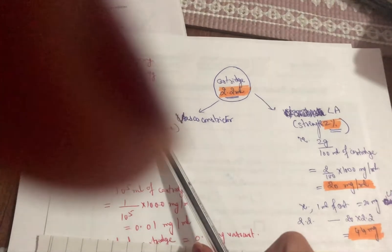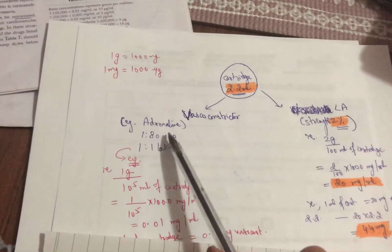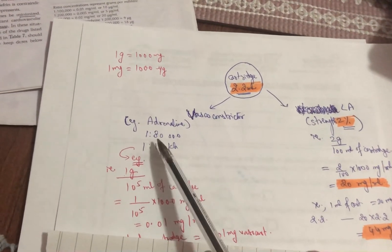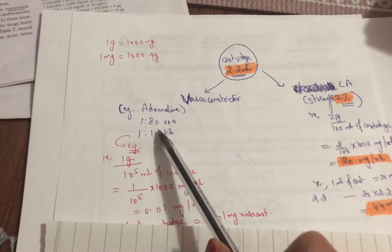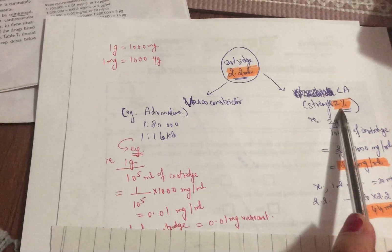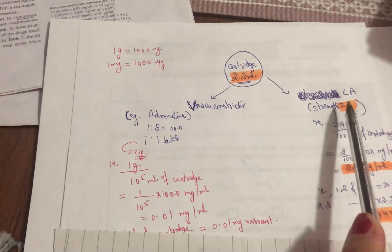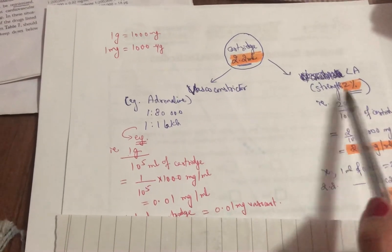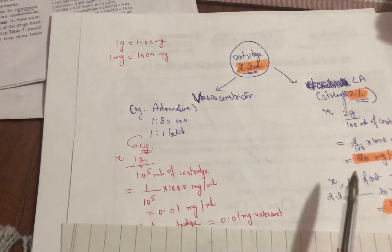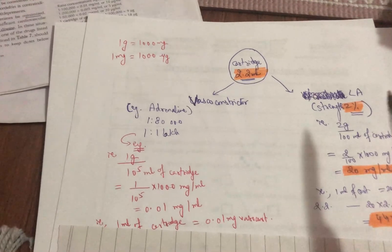Now in this example I'm going to take 1:100,000 just like we did the strength of LA to be 2%. So I will do a comparison side by side so that it's really easy.